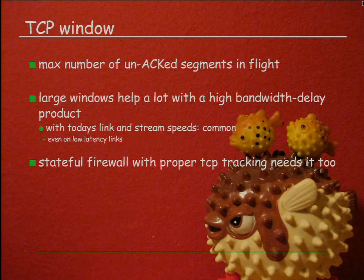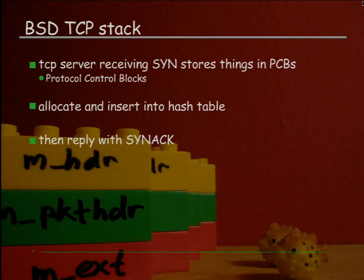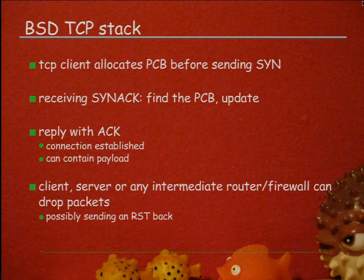Quick recap on how the BSD TCP stack works: the TCP server that receives a SYN stores parameters learned from that SYN in Protocol Control Blocks, or PCBs. Those PCBs are allocated upon reception of the first SYN and inserted into a hash table — there's a cost and memory footprint to this, even though it's relatively small. On the client side the PCB is allocated before even sending the SYN. When the SYN-ACK is received, the PCB is found, updated, and the ACK is sent — and the TCP session is fully established.